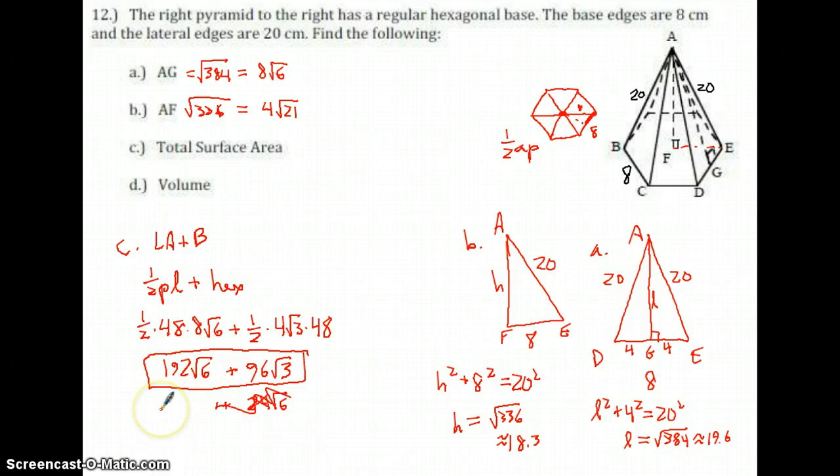If you want a decimal for all that stuff, 192 times the square root of 2 plus 96 times the square root of 3 is about 437.8. That's answer part C.